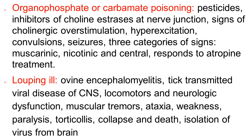Another disease is louping ill, which occurs in sheep and is called ovine encephalomyelitis. It is a tick-transmitted viral disease of the central nervous system that causes locomotor and neurological dysfunction — muscular tremor, weakness, paralysis, collapse, and death. Isolation of the virus from the brain is confirmation of the disease.